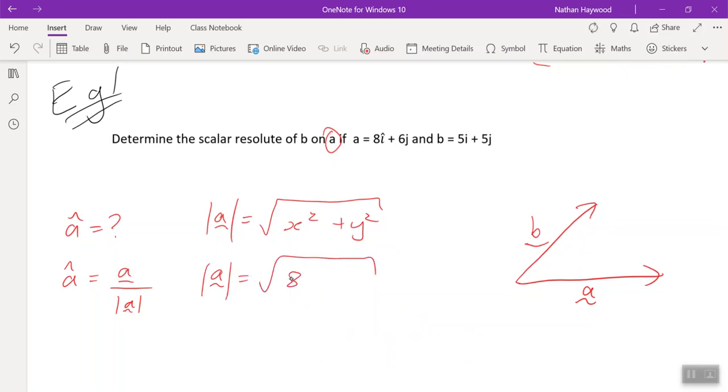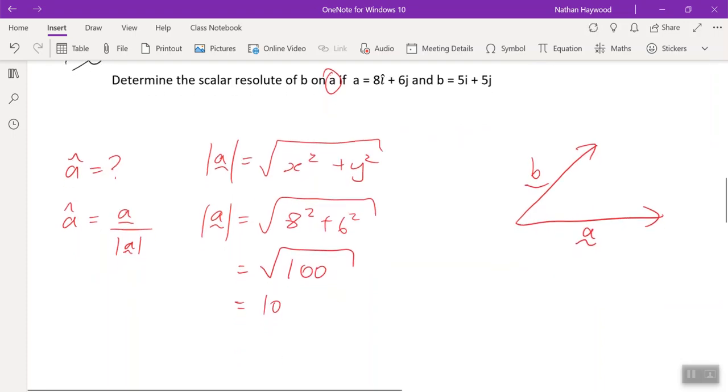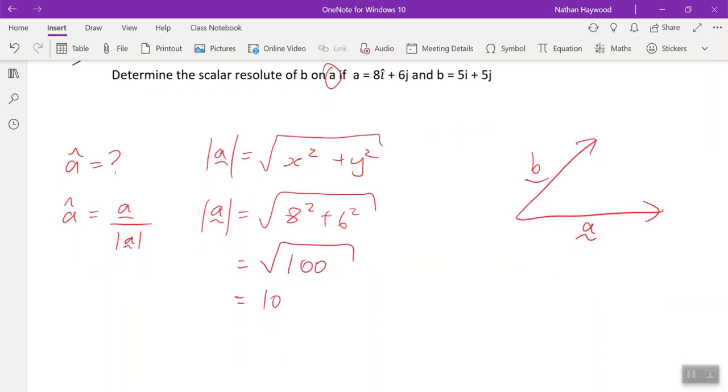So 8 squared is what? 64 plus 36 is? Oh, look at that. I conveniently picked a nice number. So now, we've found the magnitude of A. We're turning A into a unit vector.